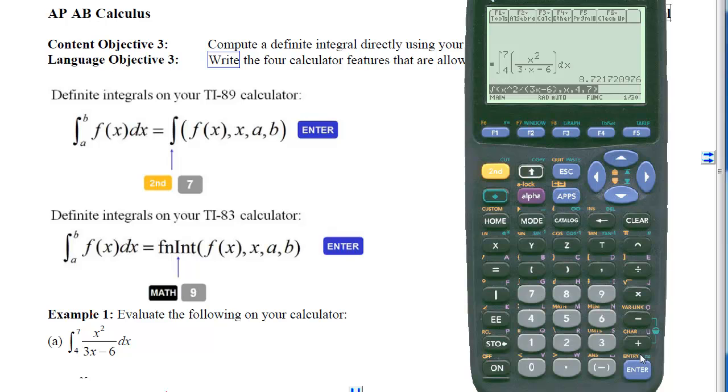We end up with 8.721. Notice, with this answer, I can either choose to truncate to 8.721, or I can round up to 8.722. Either one would be correct on the AP.